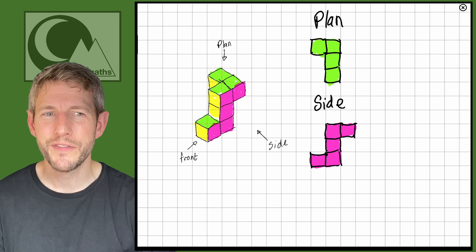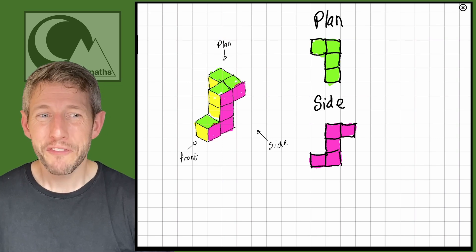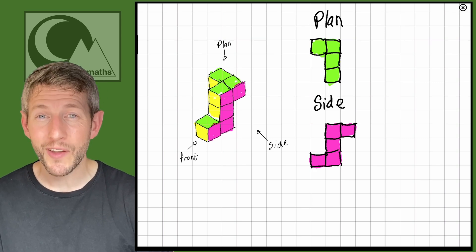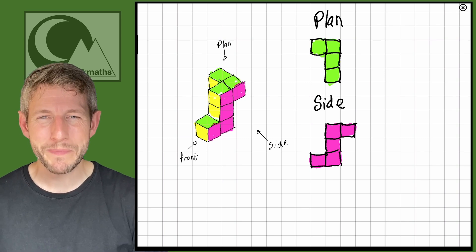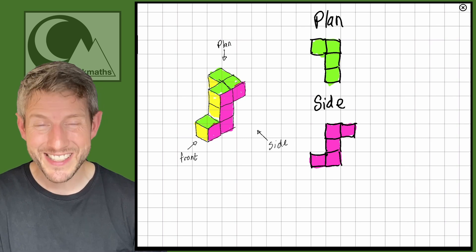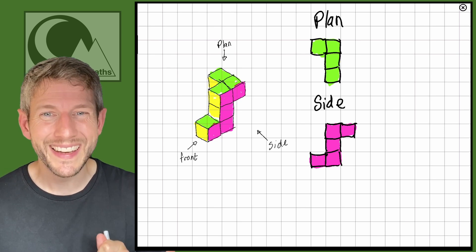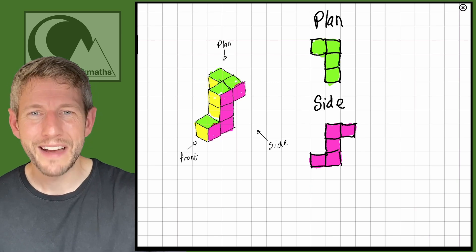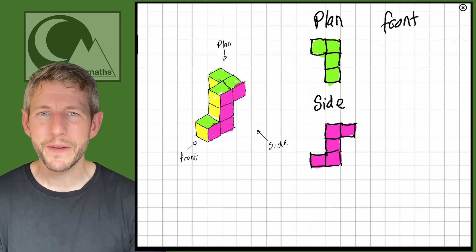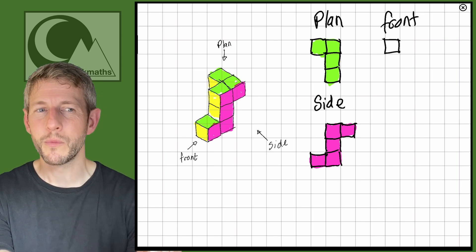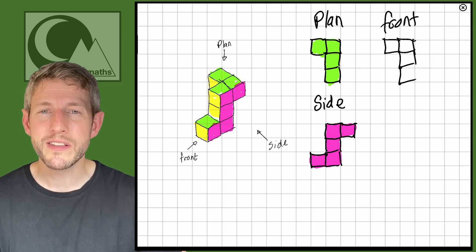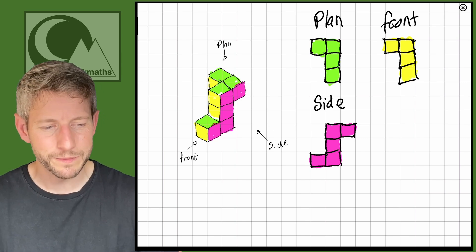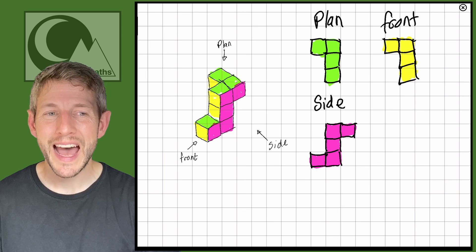Now we have the plan and side view. The last view is the front. The front view is a little tricky for this shape — at the very top, shifted back, there's a yellow square. We can't tell exactly how many there are due to the positioning, so I'll assume it's just one. We have this top square, then next to it — looking directly from the front — a square to the side, then a square underneath, and another square below that. The front view and the plan view happen to be exactly the same.